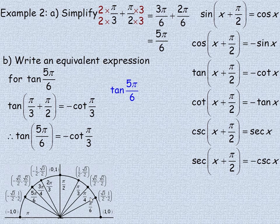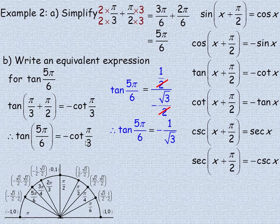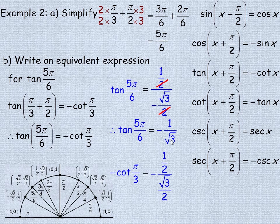We can show this using the unit circle. For the angle 5 pi over 6, tan equals sine over cosine: one half divided by negative root 3 over 2. The 2s cancel, giving negative 1 over root 3. For negative cotan of pi over 3, cotan is cosine over sine, so it's negative one half divided by root 3 over 2. Again the 2s cancel, giving negative 1 over root 3 — the same result. So they are certainly equivalent.